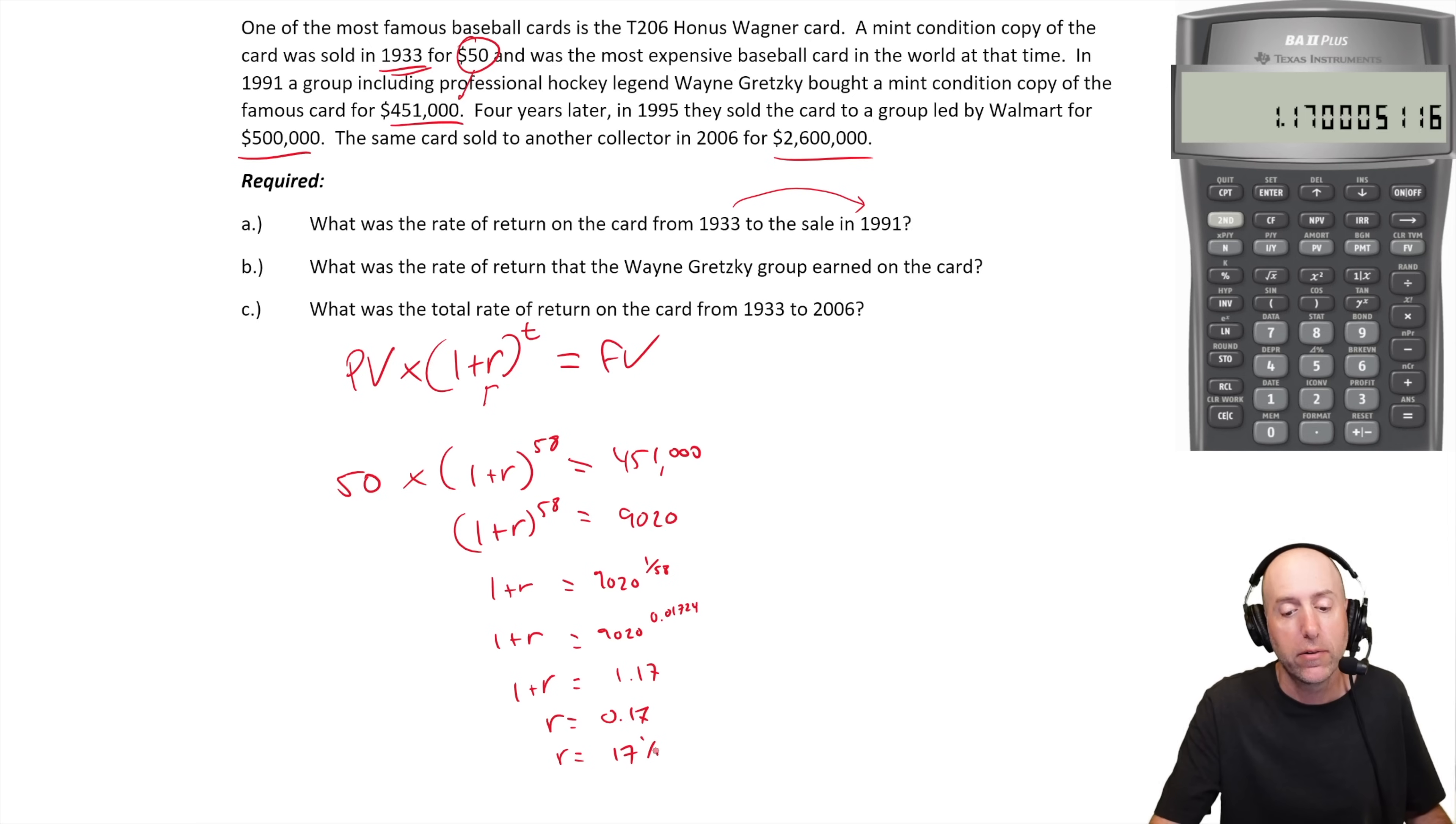R equals 0.17, or 17 percent. So in answer to part A, the rate of return of the card from 1933 to 1991 - it's a crazy example, an unusual type of investment - you would have earned an annualized return of 17 percent, way outperforming any stock market over the same time period.